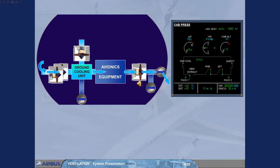The avionics equipment ventilation controller controls the avionics ventilation system, and sends opening and closing signals to the overboard, underfloor, and extract valves, and the ground cooling valve.